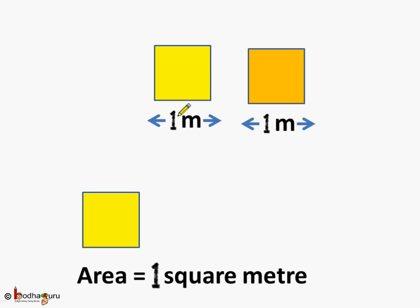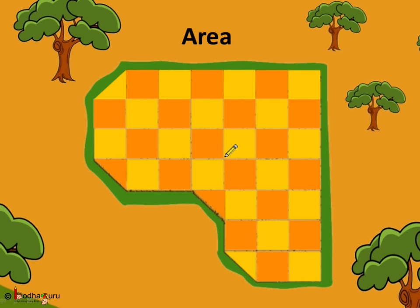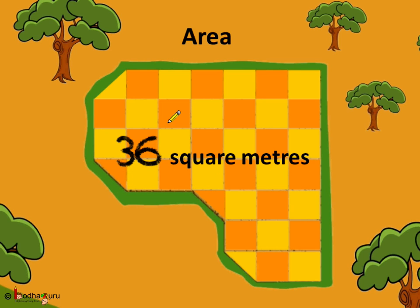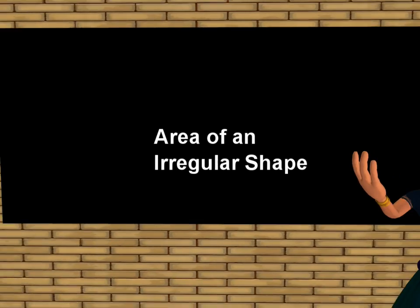Again, suppose each side of the square tile used to measure the land is equal to one meter, so the area of one square tile is 1×1=1 square meter. Therefore, the area of this irregular shape filled by 36 square tiles would be 36 square meters. That's all for now — bye-bye children!